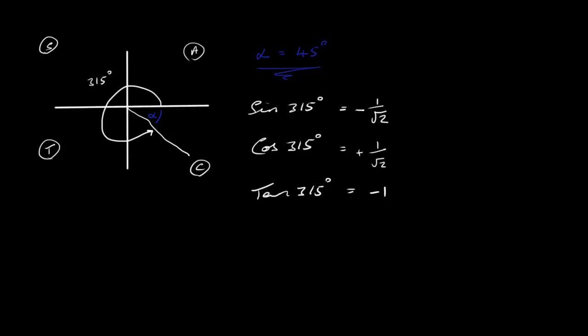So that's all you've really got to do. Find the sine, cos, and tan of your reference angle — the angle the line makes with the nearest x-axis. That gives you the numerical value of the sine, cos, and tan of the angle you're looking for. Then decide whether the sine, cos, or tan should be positive or negative depending on which quadrant it's in.